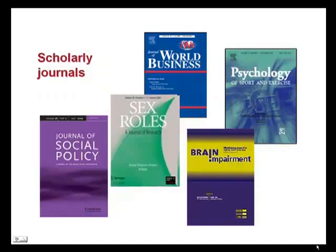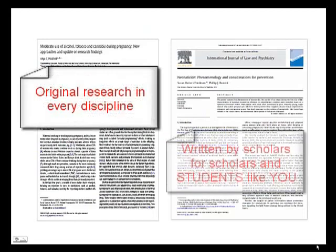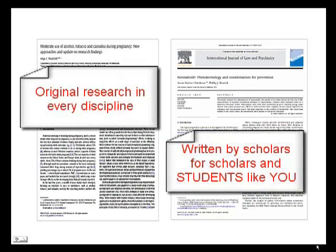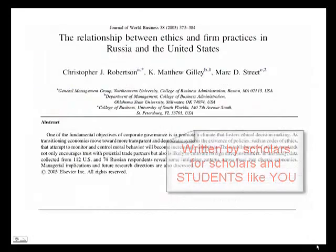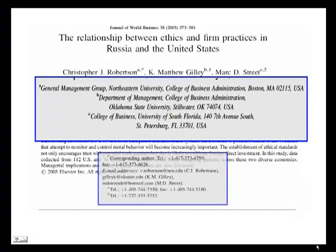The most formal writing is found in scholarly journals. If you're looking for the most recent research in any discipline, this is where you'll find it. Journals are the primary means of communication among scholars throughout the world. Consequently, authors are expected to list their credentials, university affiliations, and contact information at the beginning or end of an article.